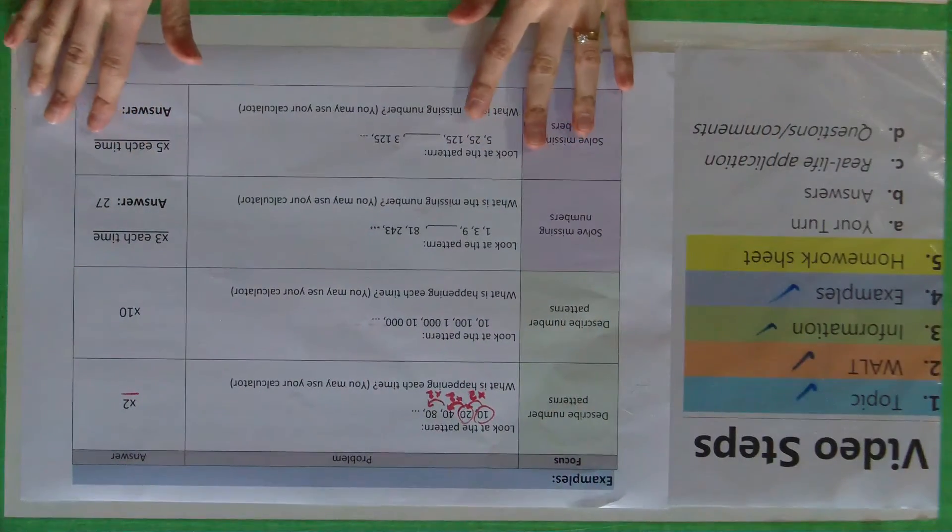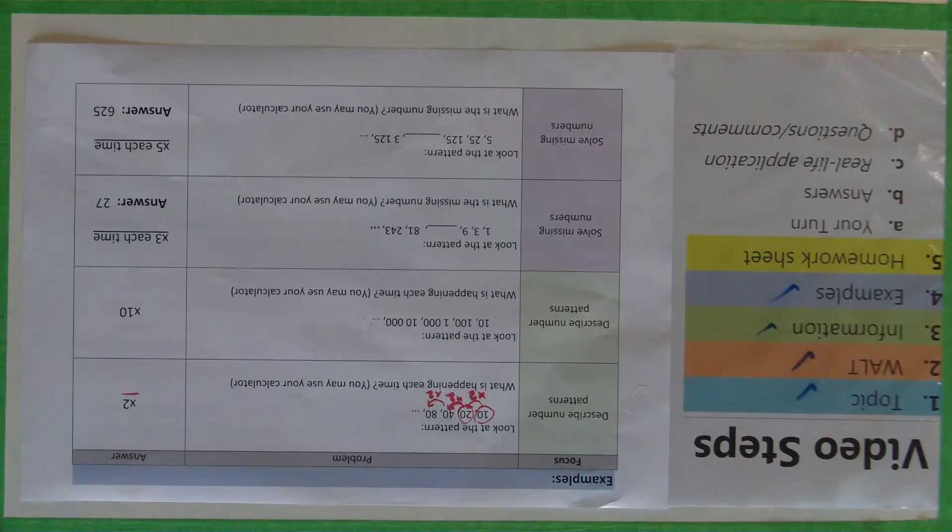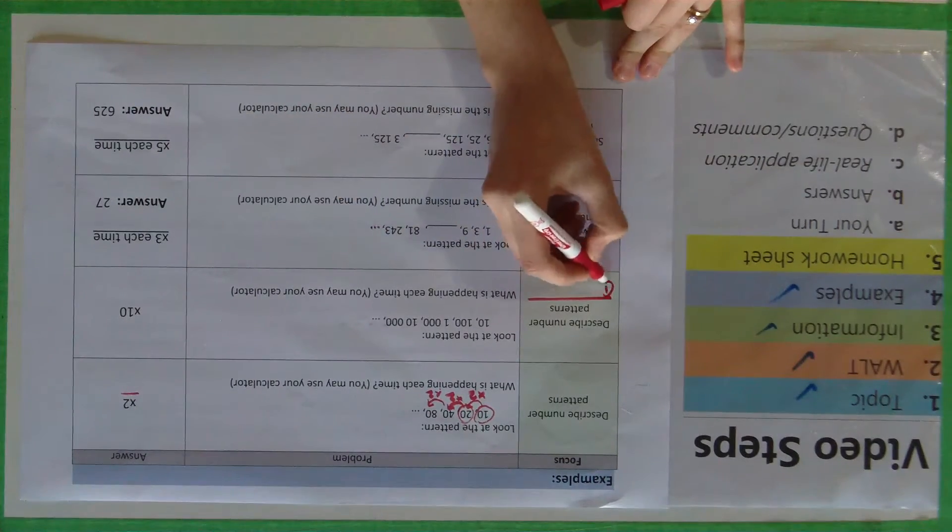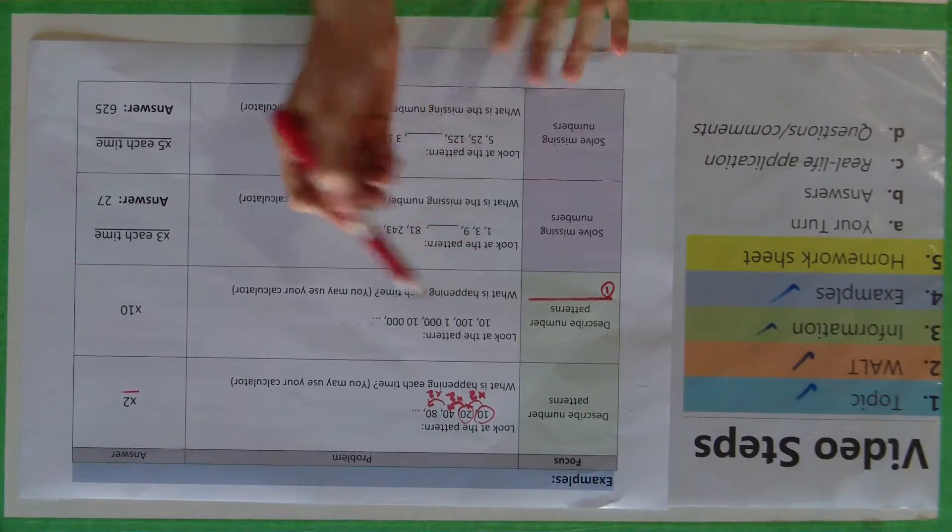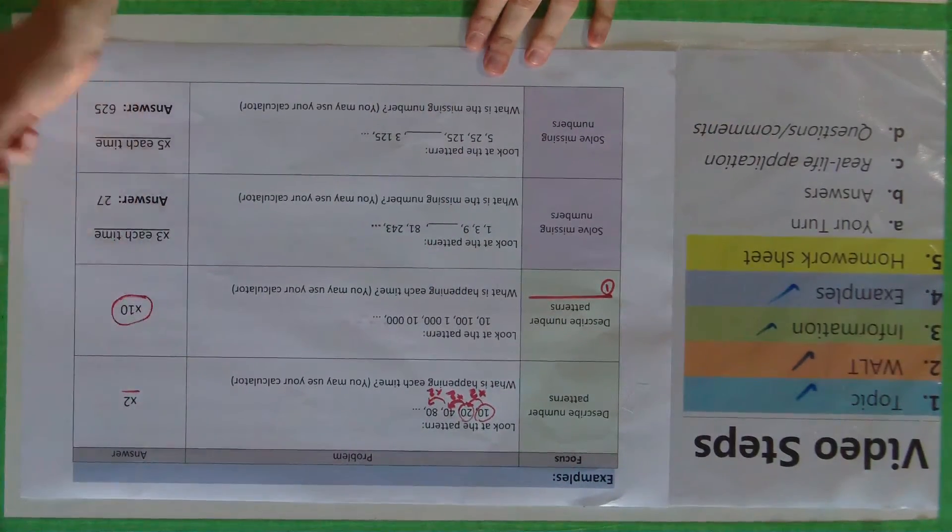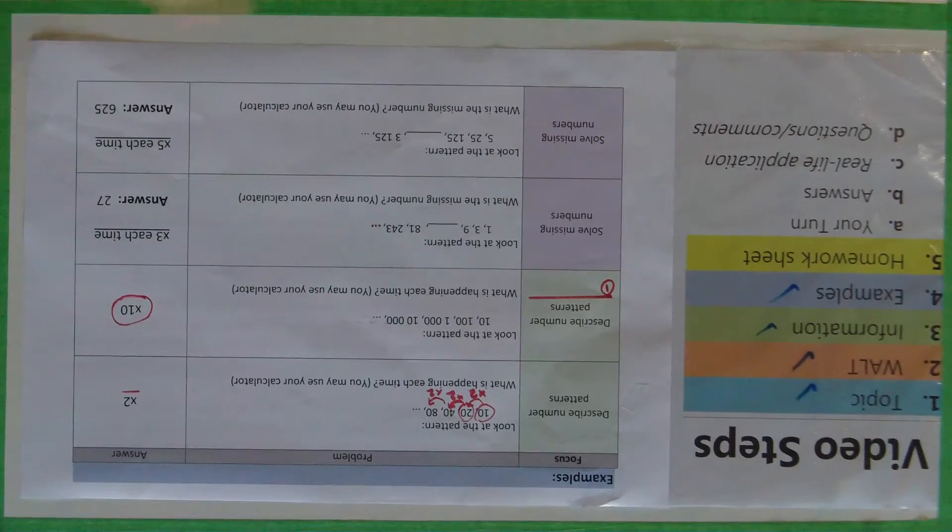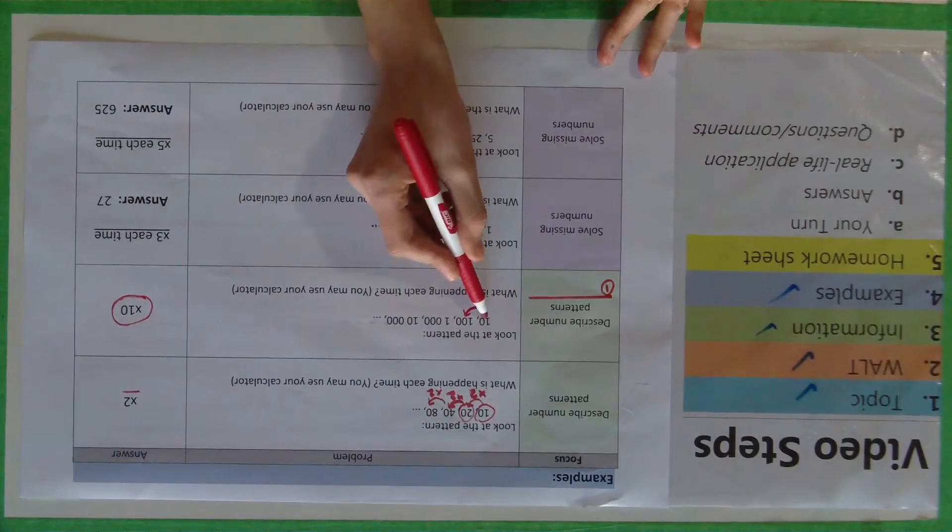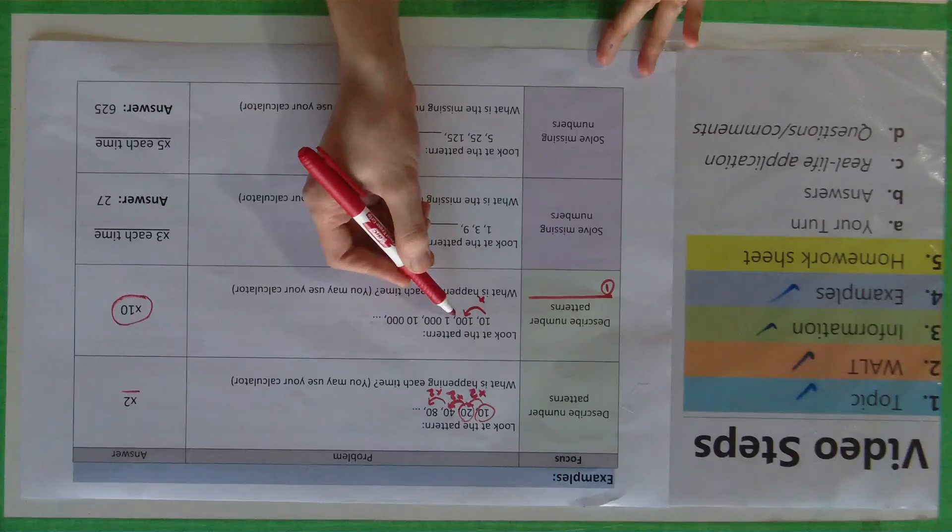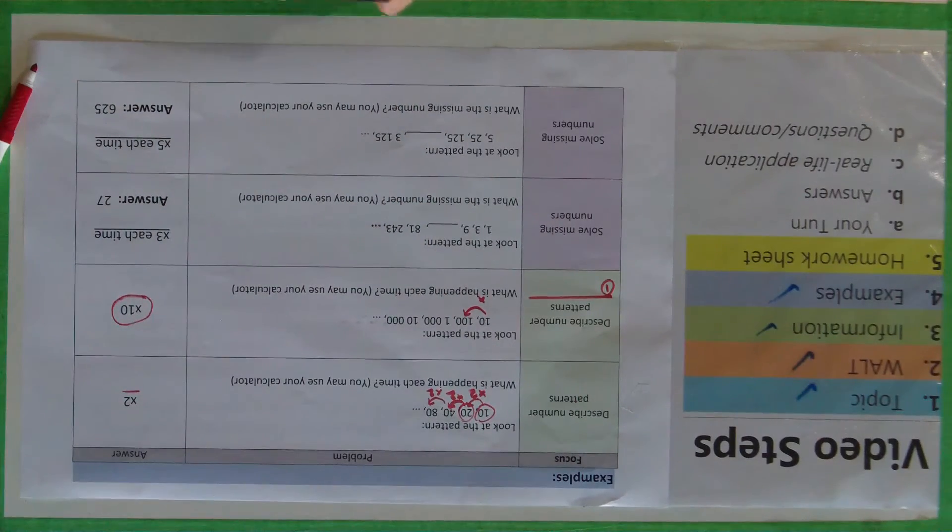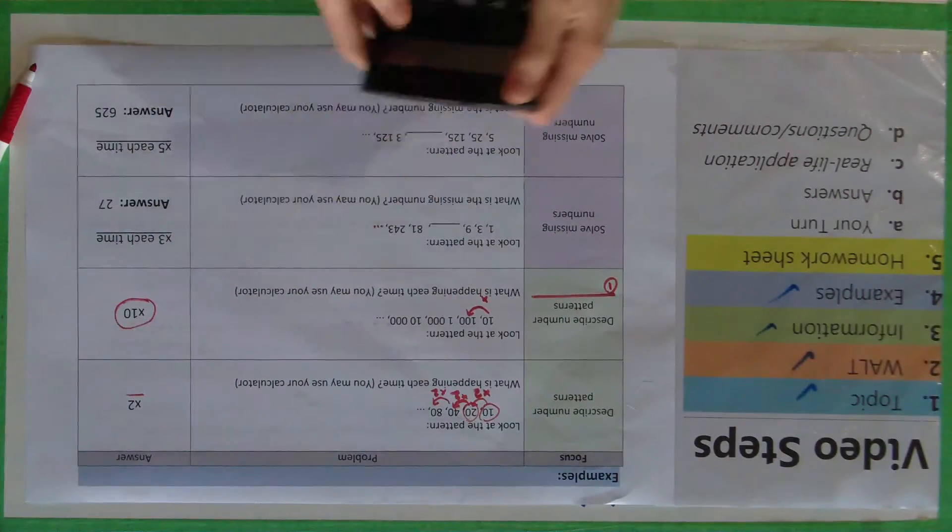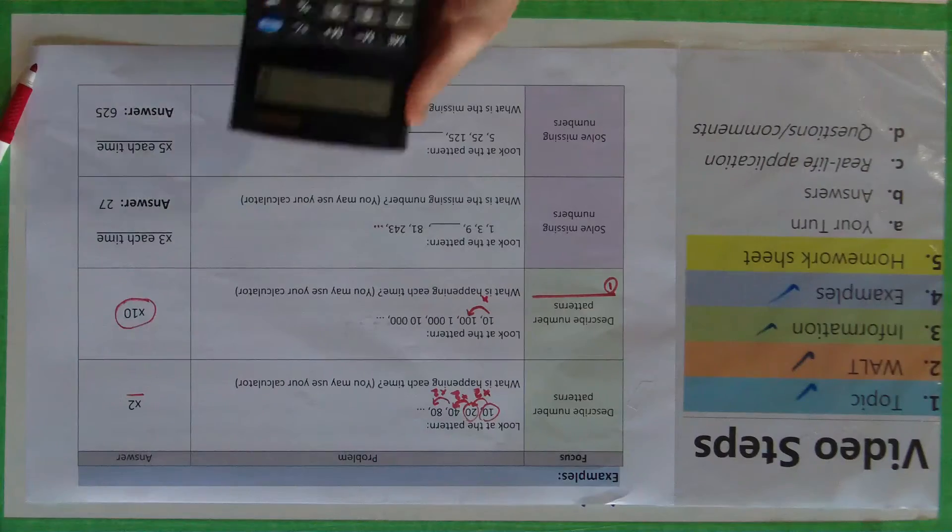On the sheet here, feel free to pause the video and just read through some of them. Basically describe number patterns as our first goal, and that is going, well what is it going up by? I've already got the answer here which is going up by multiplying by 10 each time. You can use division to help you out with that one. If you go 100 divided by 10, that will tell you what we are multiplying each time by.